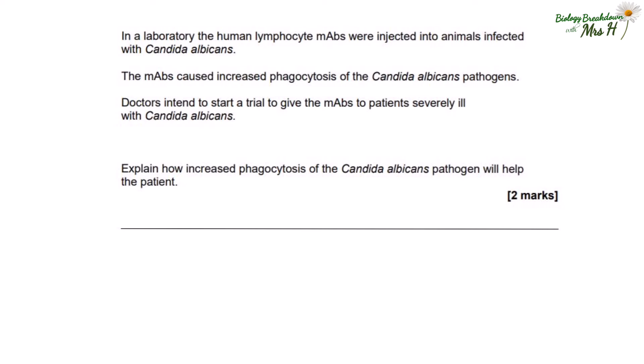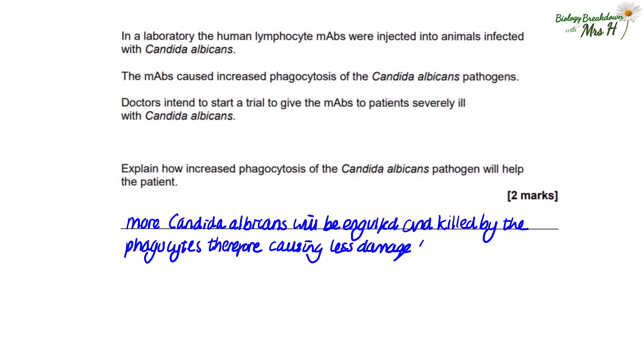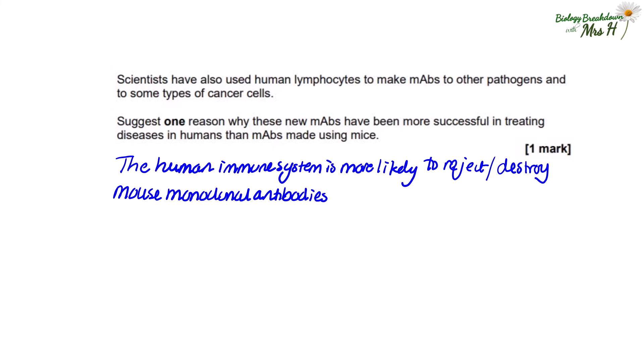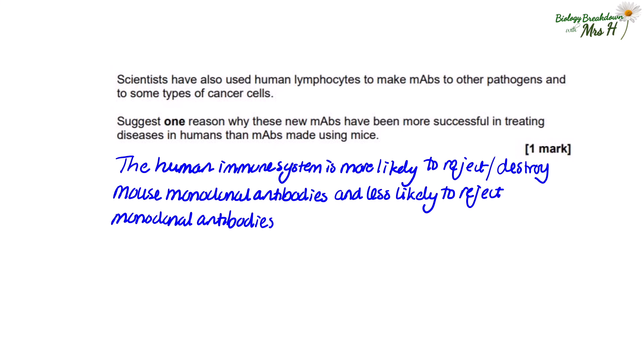In a laboratory the human lymphocyte monoclonal antibodies were injected into animals infected with Candida albicans. The monoclonal antibodies caused increased phagocytosis of the Candida albicans pathogens. Doctors intend to start a trial to give the monoclonal antibodies to patients severely ill with Candida albicans. Explain how increased phagocytosis of the Candida albicans pathogen will help the patient. Answer: more Candida albicans will be engulfed and killed by the phagocytes, therefore causing less damage to the cells. Suggest one reason why these new human-derived monoclonal antibodies have been more successful in treating diseases in humans than monoclonal antibodies made using mice. Answer: the human immune system is more likely to reject or destroy mouse monoclonal antibodies and less likely to reject monoclonal antibodies that are human.